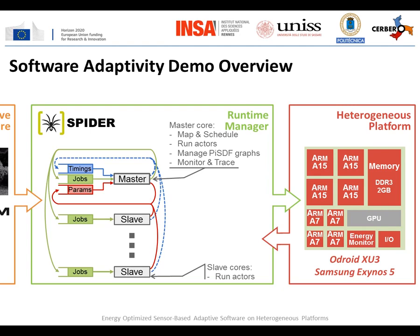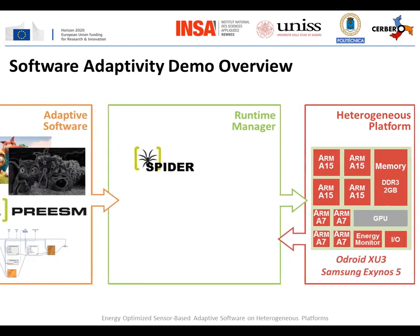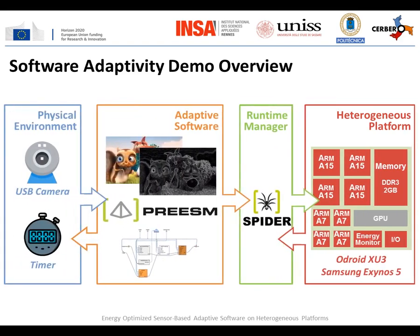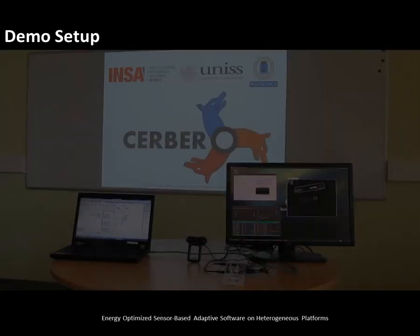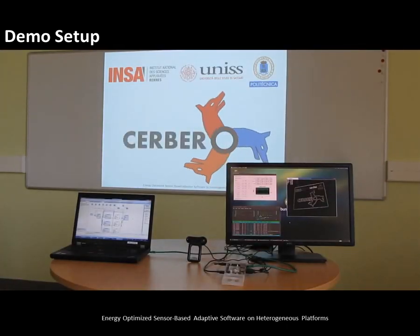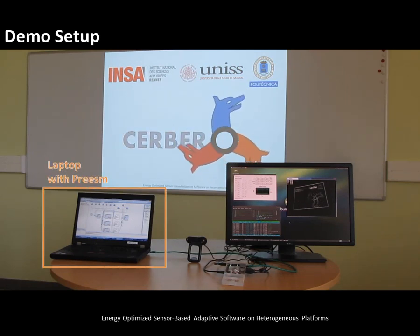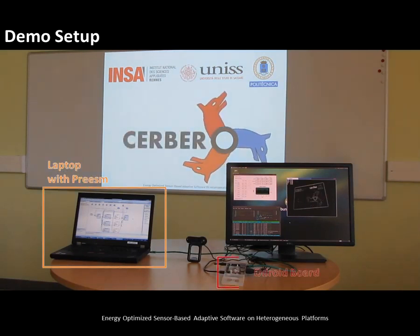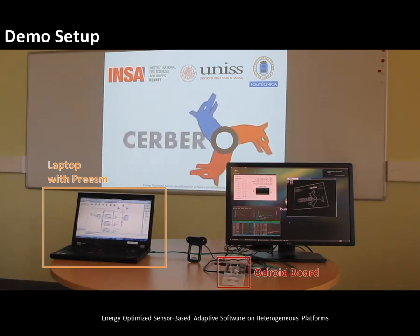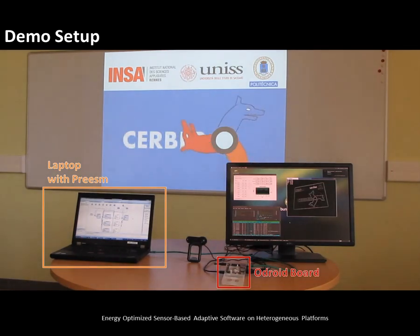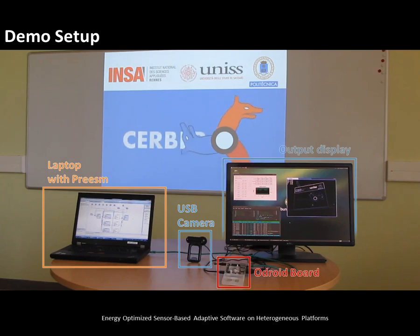The overview of the components of our adaptive software demonstration is now complete. We can see the complete setup of the demonstration. On the left, the laptop is running the PRISM framework used by the application designer. The code generated by PRISM is sent to the Odroid board on the right through an Ethernet connection. The Odroid board is connected to a USB camera feeding data to the adaptive software, and to a computer monitor for displaying the application output.